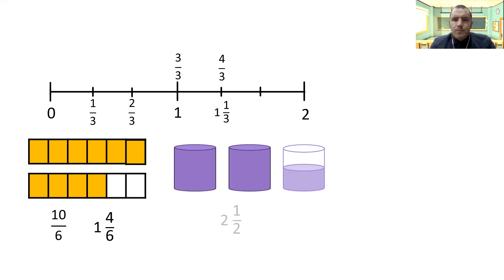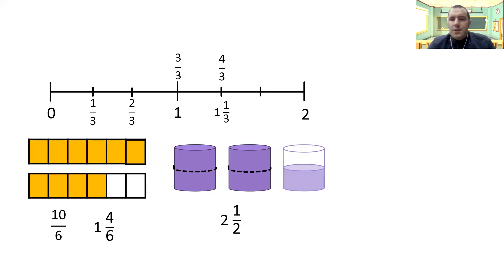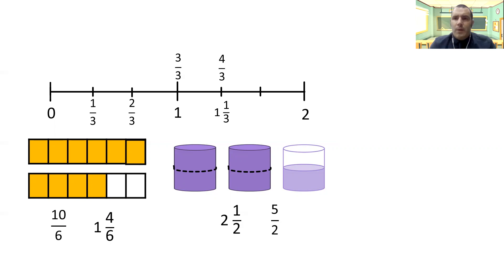Moving on to our barrels: two and a half — that's my mixed number fraction. To write it as an improper fraction, I need to work out how many halves I've got in total. I've got two on the first barrel, then another two on the second barrel to give me four halves, plus the one that's on the half-full barrel — that's five halves. So that would be written five over two. So you can see how we can convert from an improper fraction to a mixed number and back again.